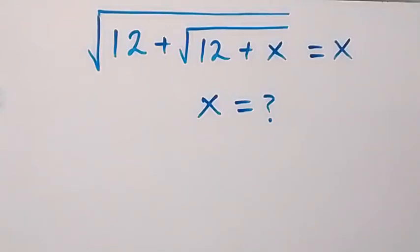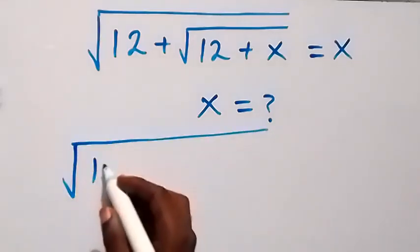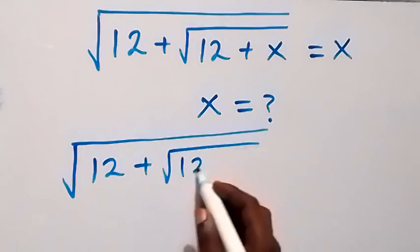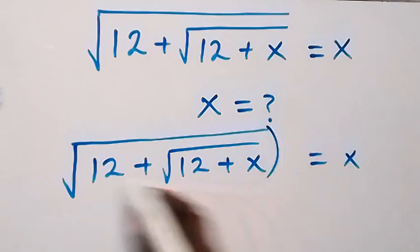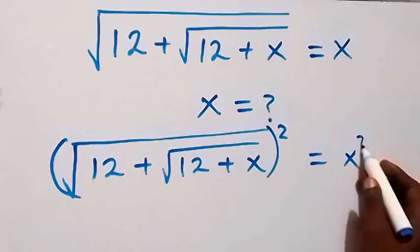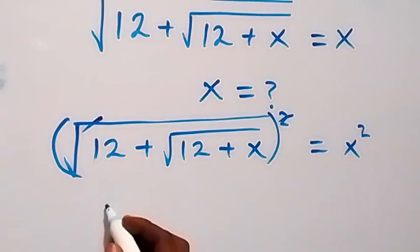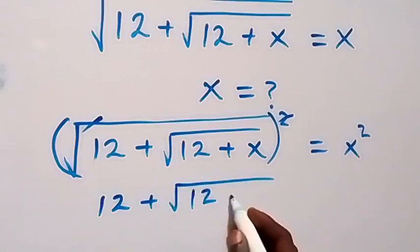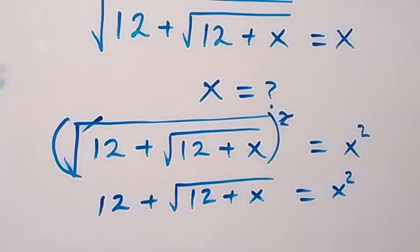Hello, you are welcome. How to solve this nice square root problem. From here, let's square both sides. What is given: square root of 12 plus, inside that we have square root of 12 plus x, then equals to x. We square this side and also square this side, and the squares cancel the square roots. This becomes 12 plus square root of 12 plus x now equals to x squared.